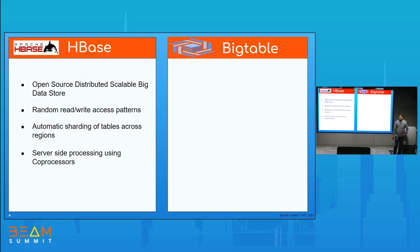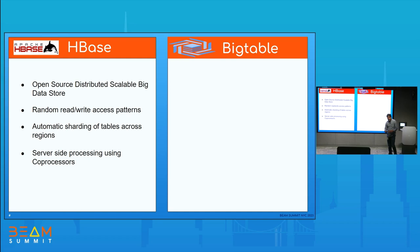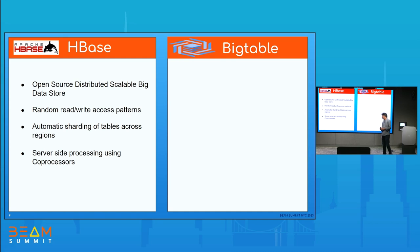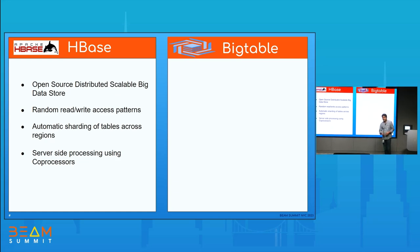Most of you might already know what HBase is — it's an open source, distributed, scalable big data store. I won't go into detail about HBase and Bigtable because this talk is not about that, but at a high level we'll cover the problem statement we are trying to solve. HBase is primarily used for random read and write access patterns, especially if you have sparse keys. You can scale up to thousands and millions of QPS depending on how big the cluster is. It also gives you automatic sharding of data across regions, and server-side processing using coprocessors.